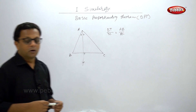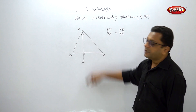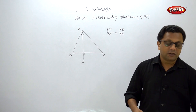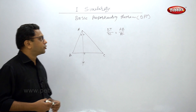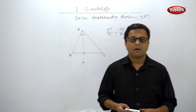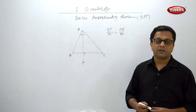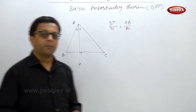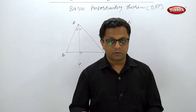Of course the converse is also true — if BT upon TC is equal to AB upon AC, then AT must be the angle bisector of angle A. So these three properties we have just learned are very simple. Based on these, we are going to solve Exercise 1.2, where we will use the angle bisector property, the Basic Proportionality Theorem, and the property of intercepts by three parallel lines. Let us go to Exercise 1.2. Thank you very much.